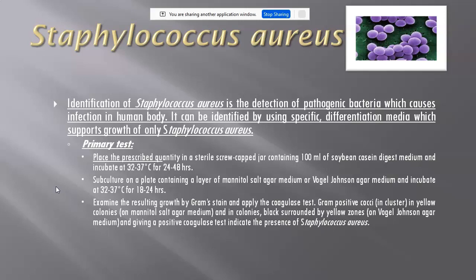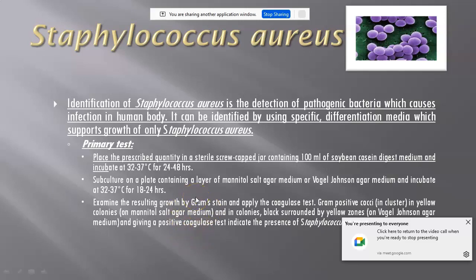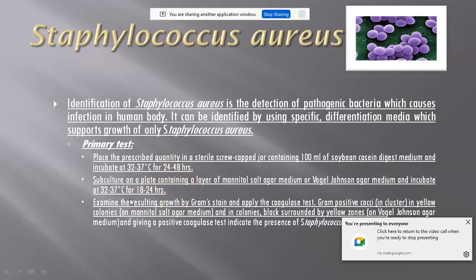In the primary test, you take the prescribed quantity of the sample in a sterile screw-capped tube or jar containing 100 ml of soybean casein digest medium. After taking the sample, you incubate the container at 32 to 37 degrees Celsius for 24 to 48 hours. After incubation, you subculture onto plates.